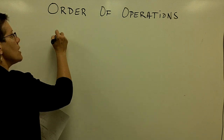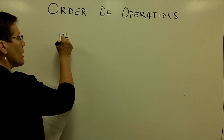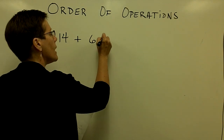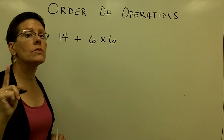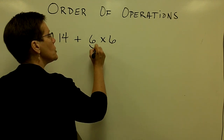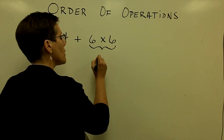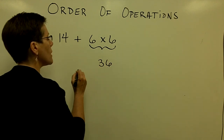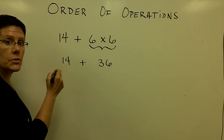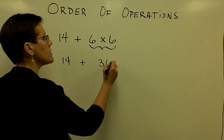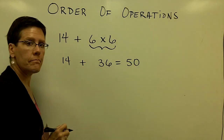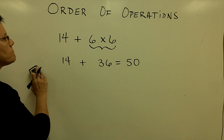Here's our first problem. If I asked you to take 14 and add 6 times 6, order of operations says that you should multiply before you add. So 6 times 6 is 36, and now you are ready to add 14 with 36 and get an answer of 50. A pretty simple problem.